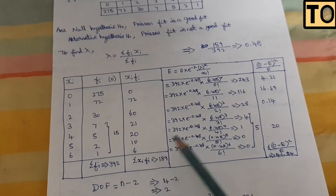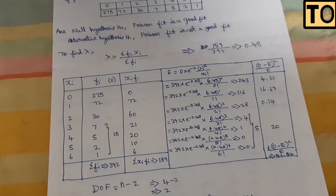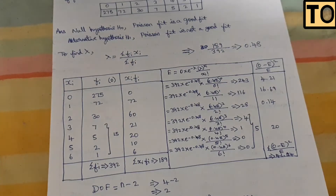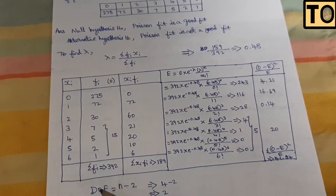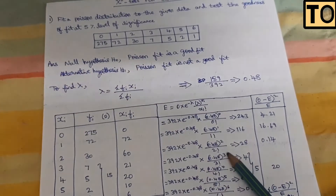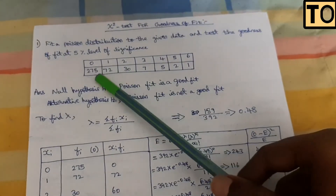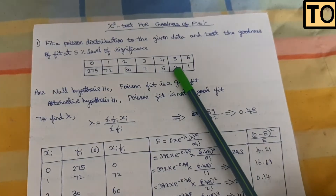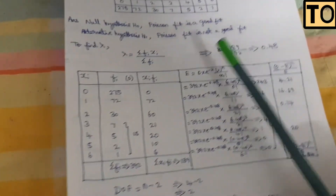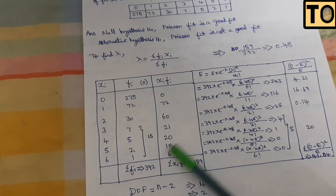For the Poisson Distribution, the degrees of freedom is n minus 2. For the Binomial Distribution, the degrees of freedom is n minus 1. Here, if you originally have 7 categories (rows 0 through 6) and combine the last few, the effective n becomes 4, giving degrees of freedom equal to 4 minus 2 equals... let's verify: the n-value is stated as 4.